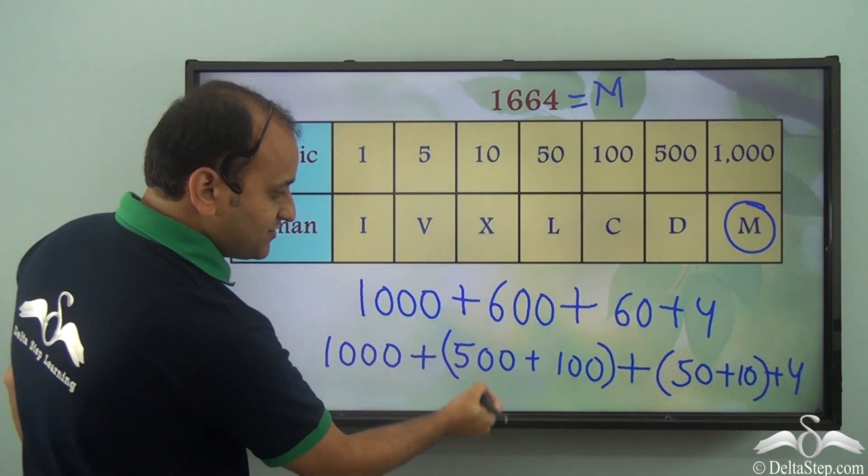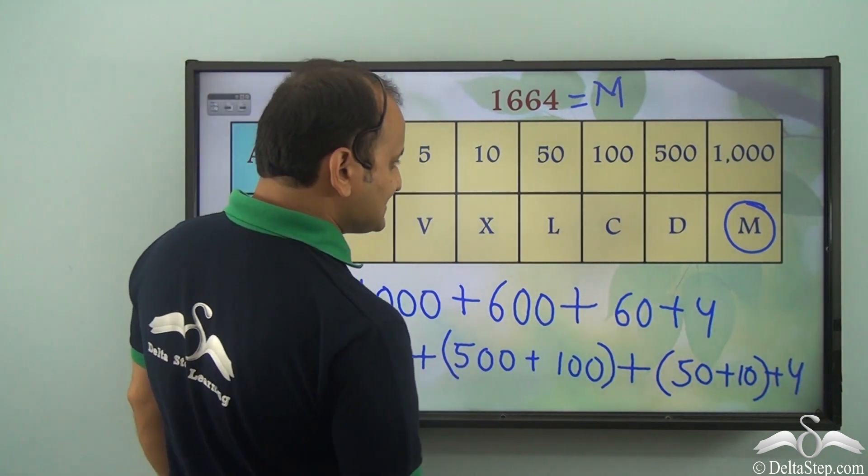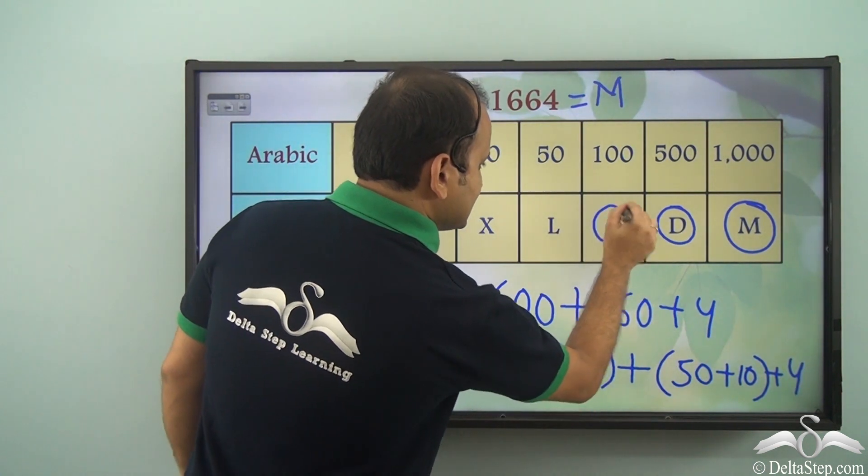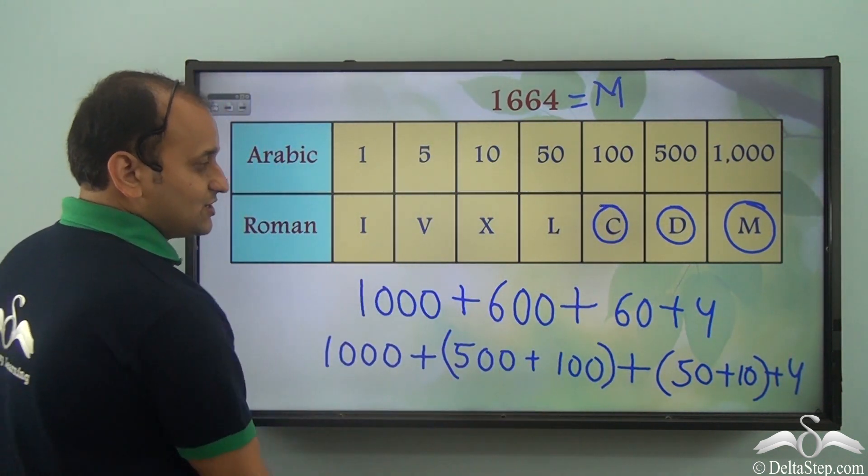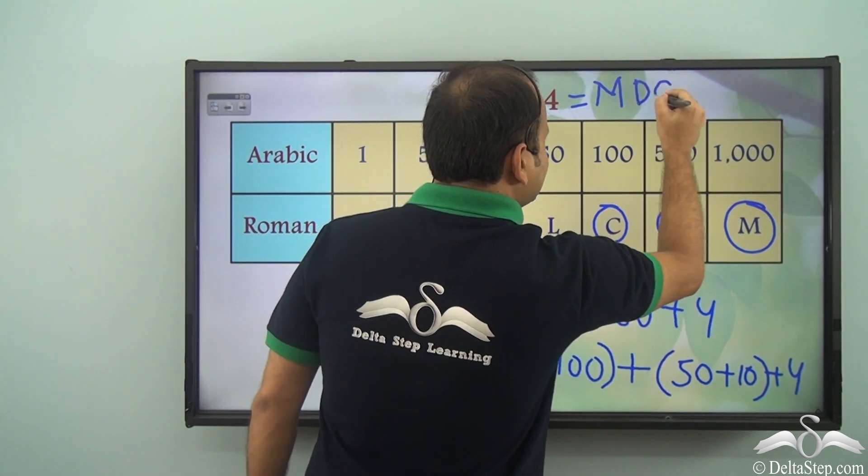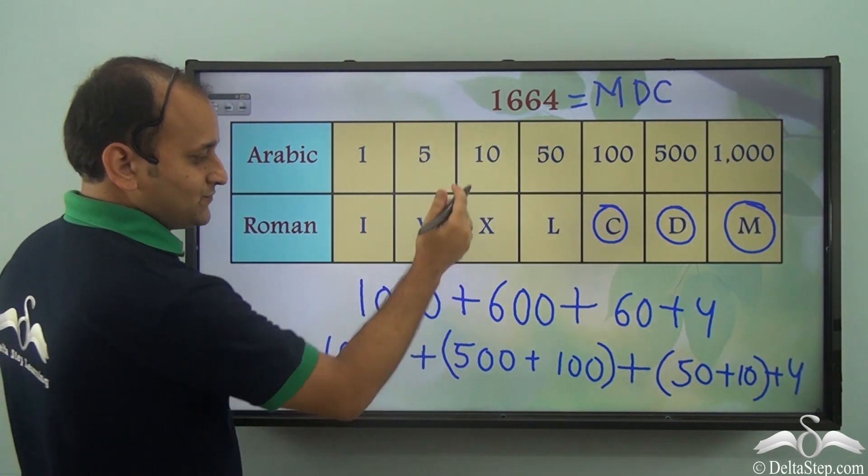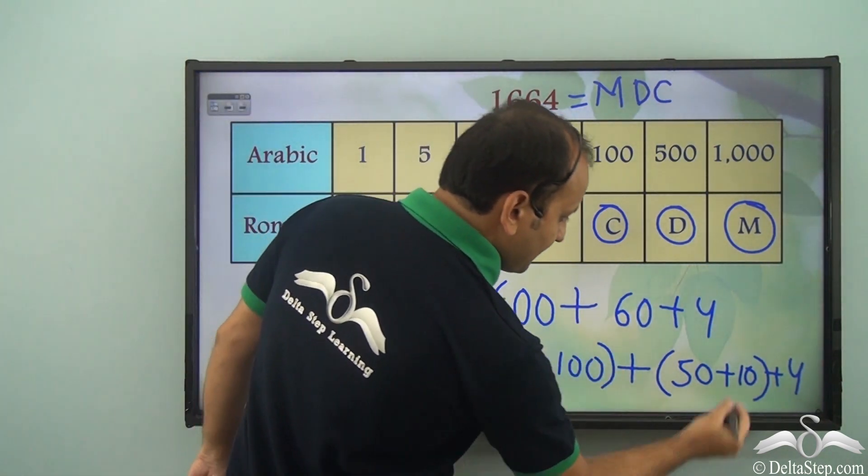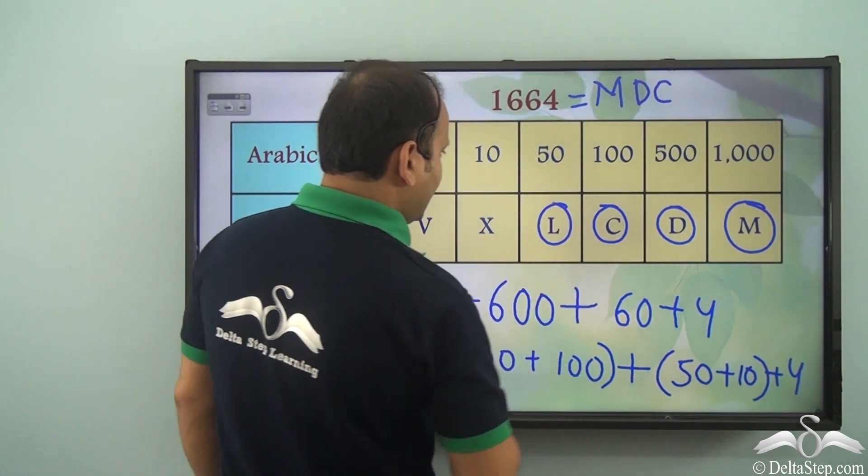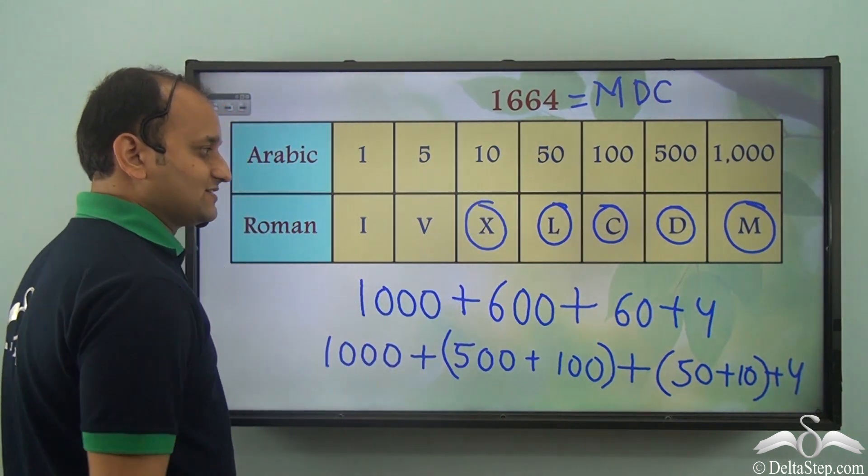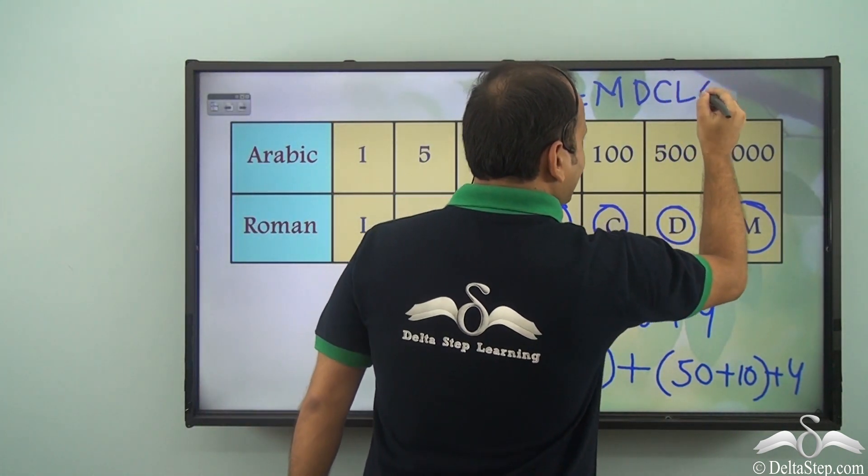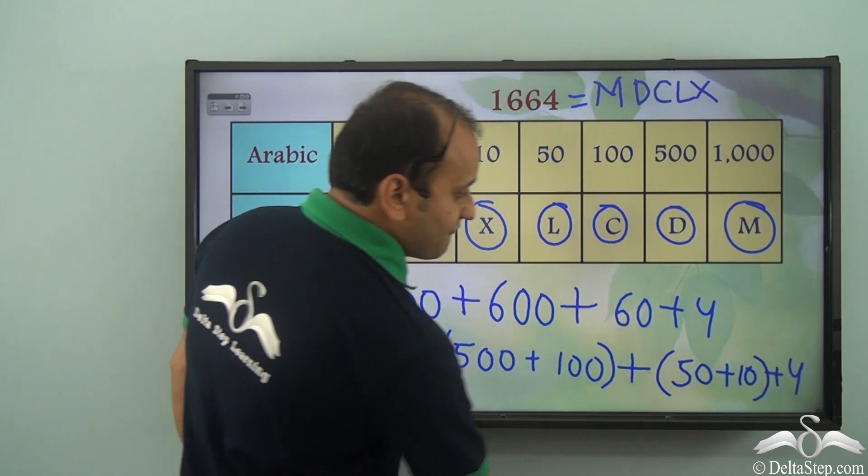Then we have 500 plus 100. Now 500 is D and 100 is C. So they get added. So we have 600 here. Then we have 50 plus 10. Now 50 is L and 10 is X. So how do we write 60? LX. L and to the right X. And then we have a 4.